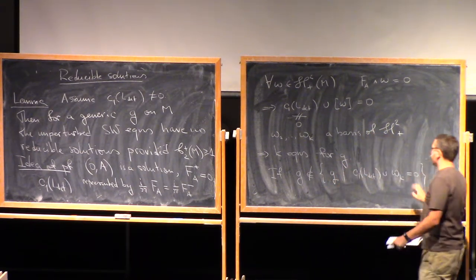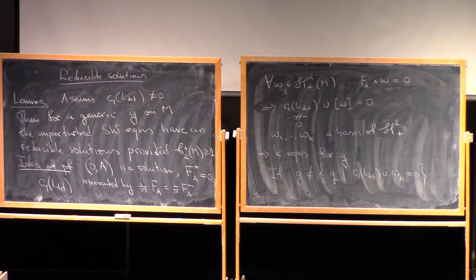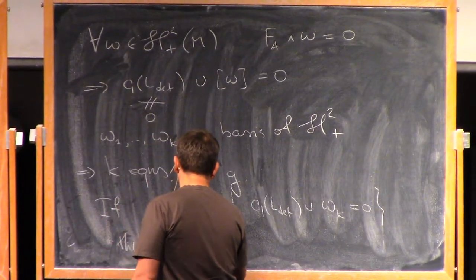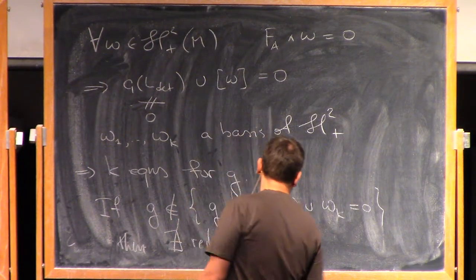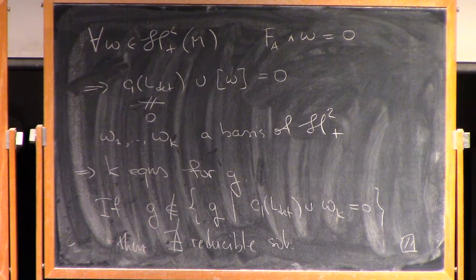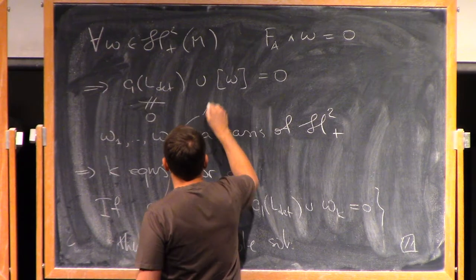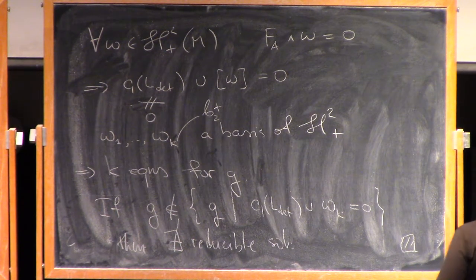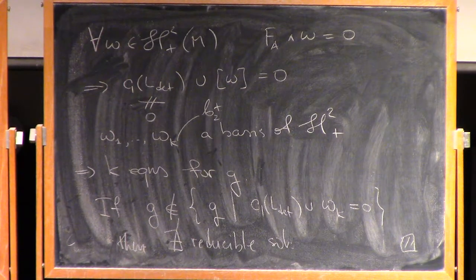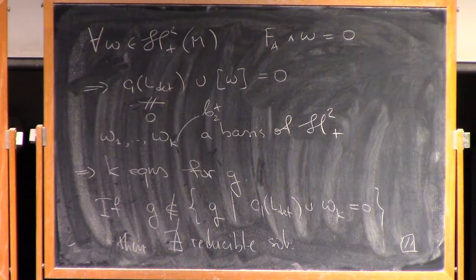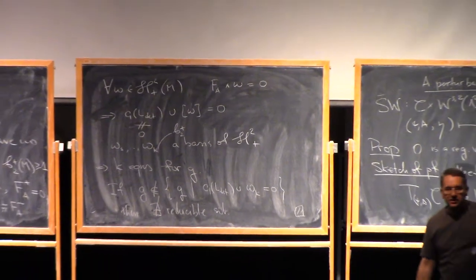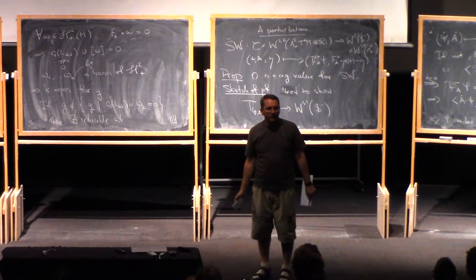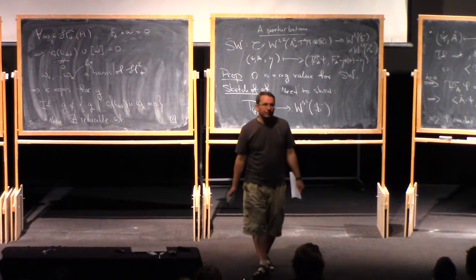You can see this relation as k equations for a metric g. I have picked here a basis, but this basis depends implicitly on the choice of the metric. This gives you k equations for g. If g is not in the set of g such that c_1(L) ∩ ω_k = 0... What I have here is a co-dimension k subset in the set of all metrics, and if I stay away from the subset, then there is no reducible solutions. So k is b^+_2? Yes, k is b^+_2.